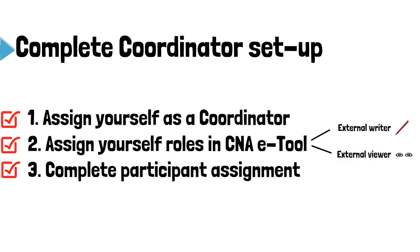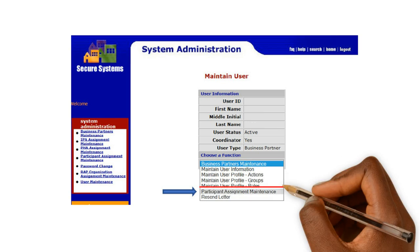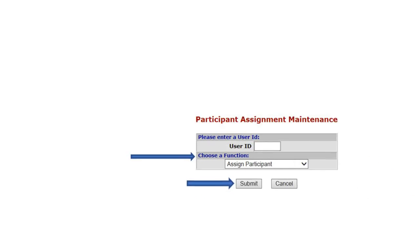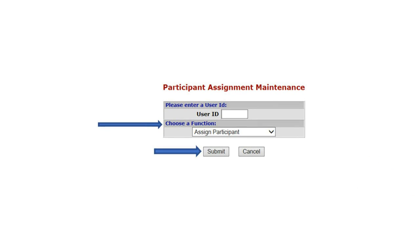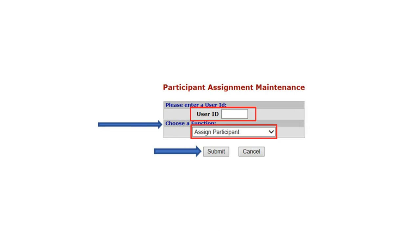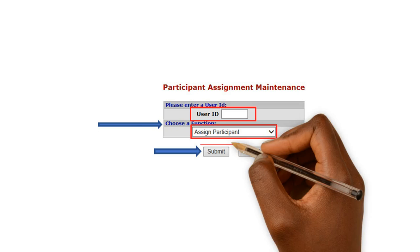For Step 3, the final step of the Coordinator setup process, you will complete your participant assignment. In this step, you are associating your account with your Needs Assessor firm. On the Choose a Function drop-down menu, select Participant Assignment Maintenance and press Submit. On the Assignment Maintenance screen, enter your MID in the User ID field. Under Choose a Function, select the Assign Participant option and Submit.